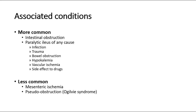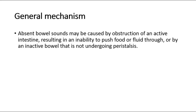The associated conditions include intestinal obstruction, paralytic ileus of any cause — such as infection, trauma, bowel obstruction, hypokalemia, vascular ischemia, or even side effects to drugs. Other less common conditions are mesenteric ischemia and pseudo-obstruction. For the general mechanism of absent bowel sound, it may be caused by obstruction of an active intestine, resulting in an inability to push food or fluid through, or by an inactive bowel that is not undergoing peristalsis.